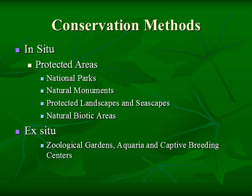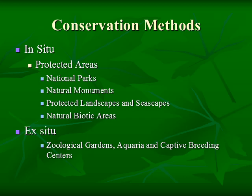We are discussing biodiversity because we are interested in conservation. There are two types of conservation methods: in-situ and ex-situ. In-situ means organisms are protected in their natural habitat, by proclaiming the area a protected area where mining and logging are not allowed. Examples include national parks, natural monuments, protected landscapes and seascapes, and natural biotic areas. Ex-situ means removing the organism, placing it in captivity, and taking care of it — examples include zoological gardens, aquariums, and captive breeding centers.